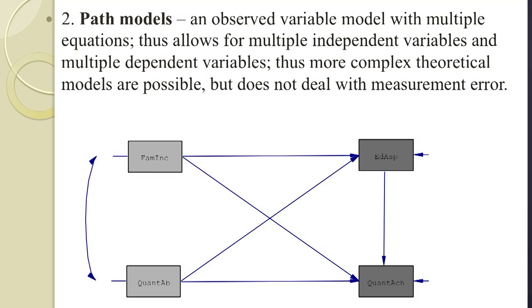Path models are a little more sophisticated. They allow for multiple independent and multiple dependent variables, so we can have more than one equation. In this case, there are two equations: three variables influence quantitative achievement, and two of those variables influence educational aspirations, giving us two error terms. But it's still an observed-only variable model, so measurement error cannot be taken into account.